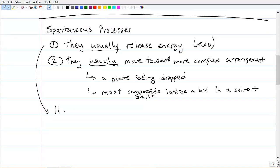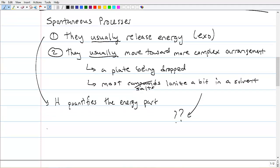This is enthalpy. So this quantifies the energy part. But what about this other piece? We don't have a variable that talks about that. So let's make one up. Let's make up a variable. Let's call this other thing, this ability, this need, this call this a need for complexity.